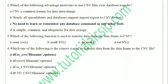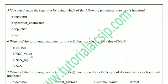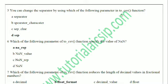Question 5: You can change the separator by using which of the following parameters in the `to_csv` function? 'Separator' is not a parameter in `to_csv`, and 'separator_character' is also not a valid parameter. The correct parameter name to change the separator in `to_csv` is `sep`.